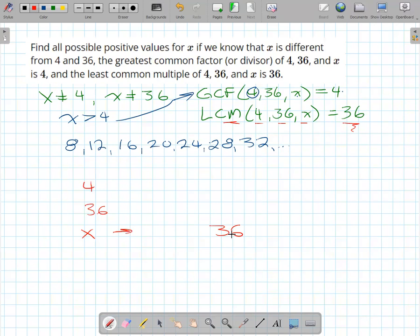So 36 is a multiple of x. So x could be 12, let's think about 36: 1 times 36, 2 times 18, 3 times 12, 4 times 9, 6 times 6. So x could be any of those numbers there.